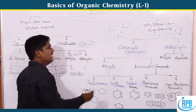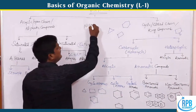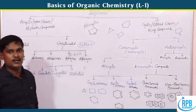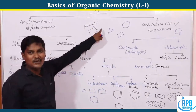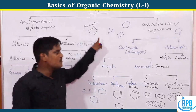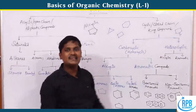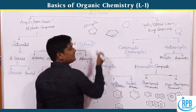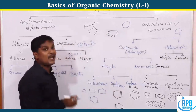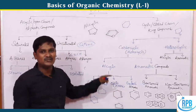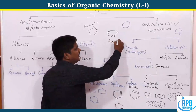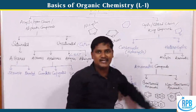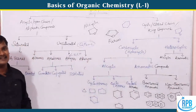For example, alicyclic heterocyclic compounds — a best example is THF, that is tetrahydrofuran, which is also a common solvent.